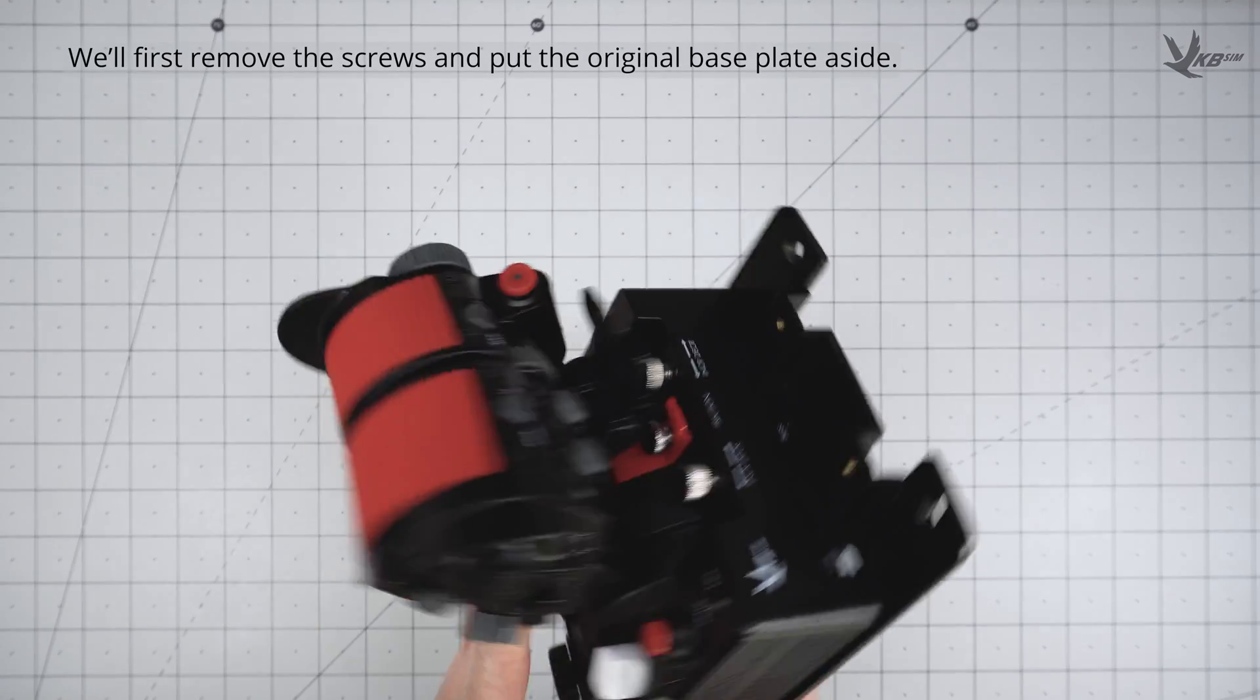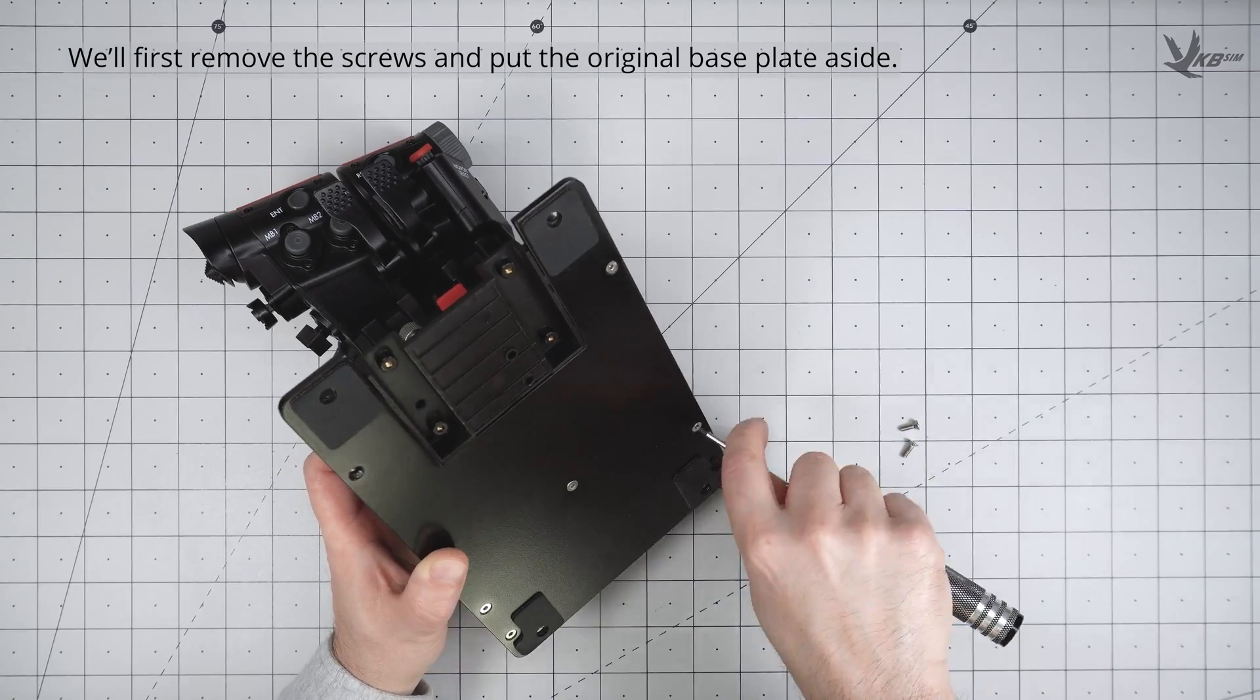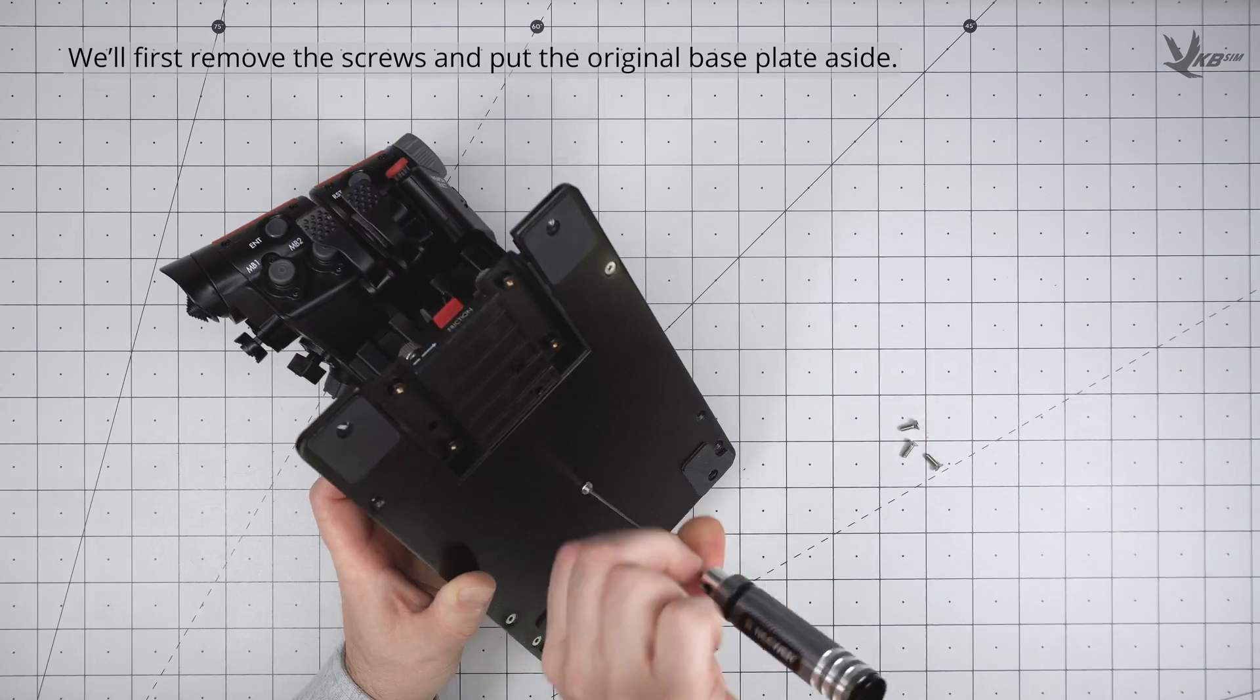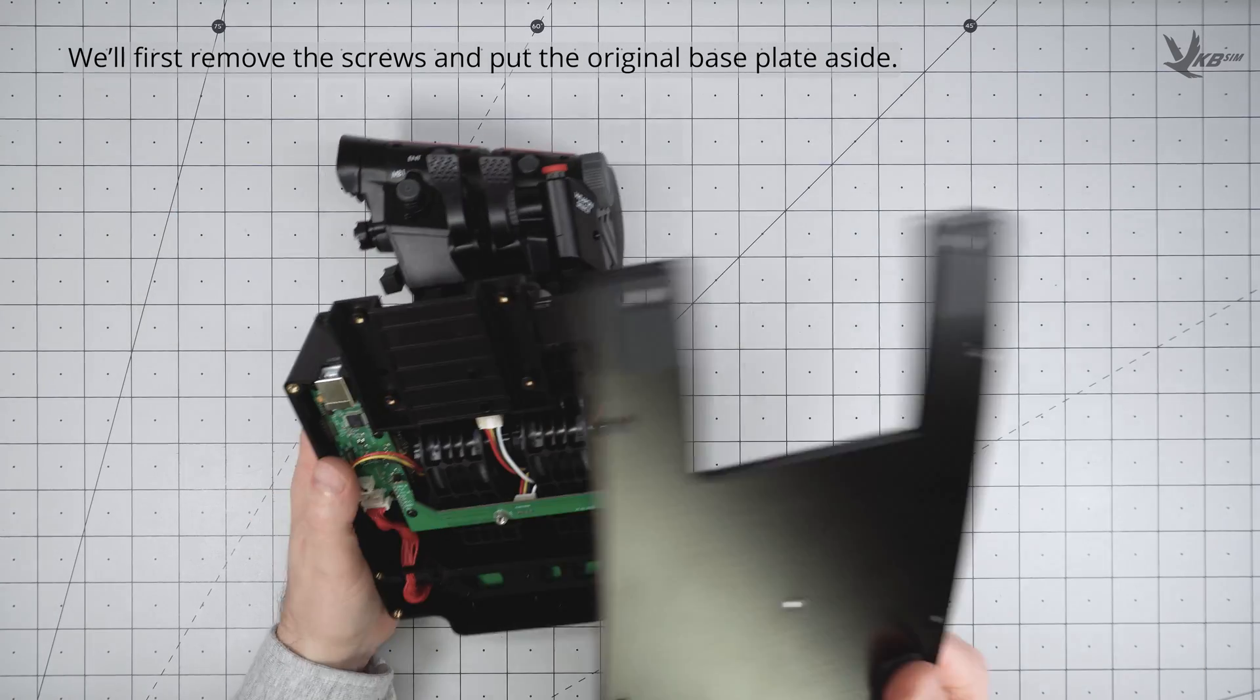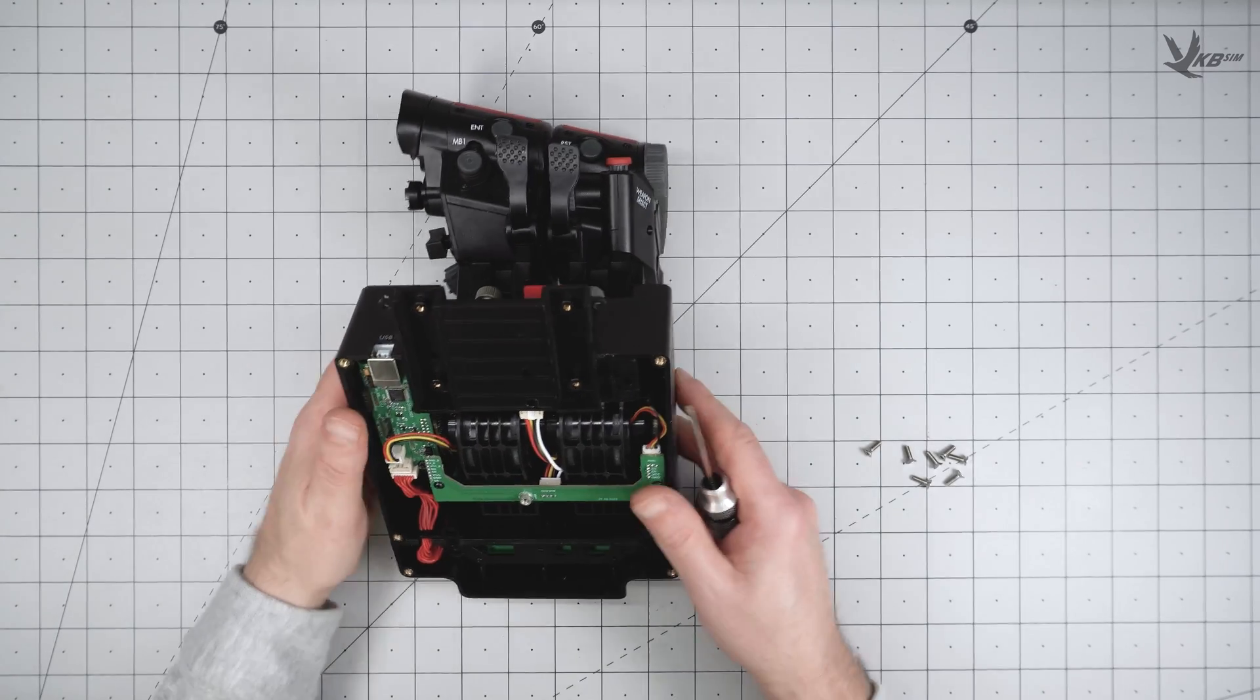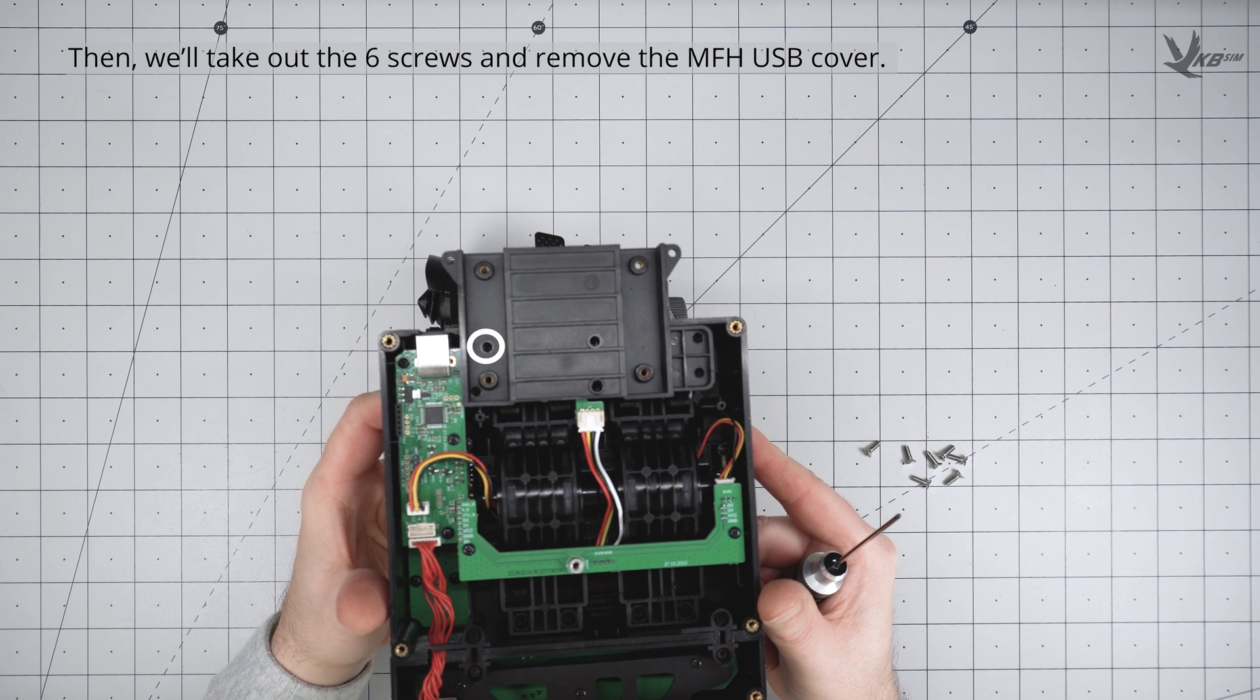Grab your STECS. Let's start by removing the screws and tossing the desktop plate aside. For throttles featuring an MFH connector, there are 6 screws in recessed holes to get at.